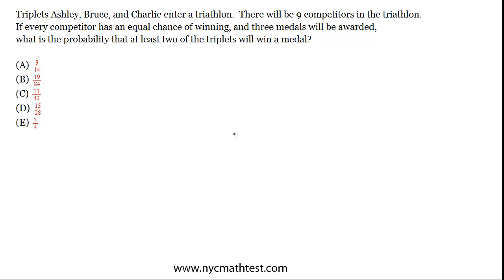Triplets Ashley, Bruce, and Charlie enter a triathlon. There are nine competitors in the triathlon. If every competitor has an equal chance of winning and three medals will be awarded, what is the probability that at least two of the triplets will win a medal?